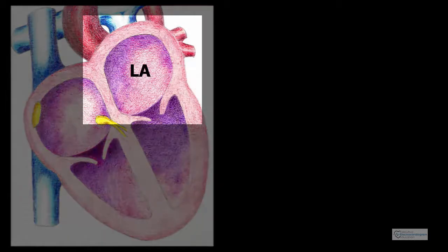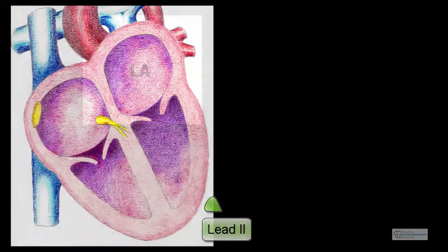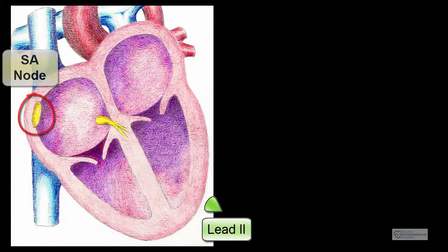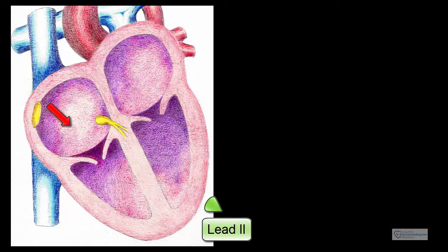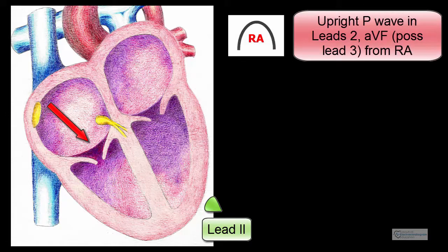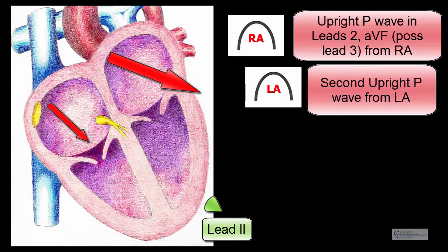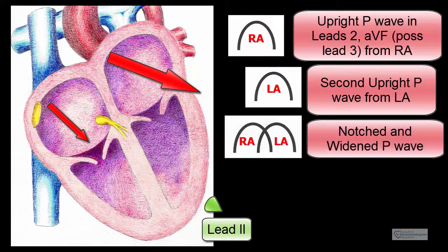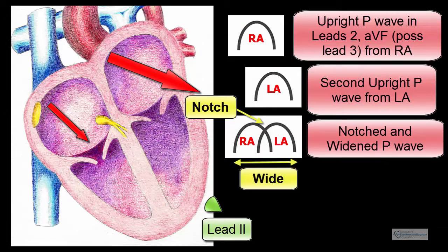Anatomically, left atrial abnormality is easy to visualize. Since conduction begins in the sinoatrial node, depolarization begins in the right atrium and gives a P wave as seen in leads 2, AVF, and sometimes lead 3. This is followed by a dominant left atrial depolarization, which is forced to the left and downward. If I draw these separately, you can see two distinct P waves. When these are superimposed, the inferior leads have the appearance of a notch, and the P wave appears widened.